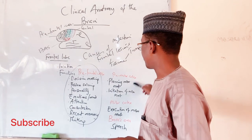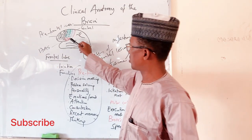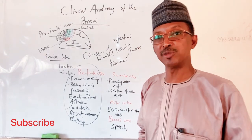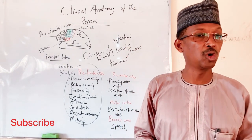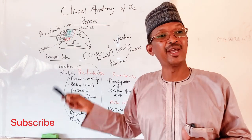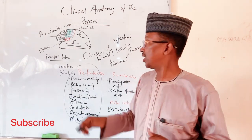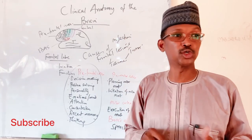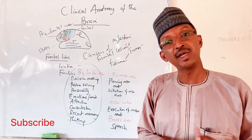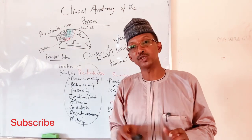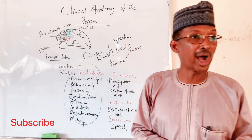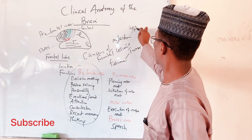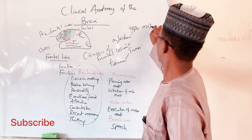If there is damage to the pre-motor cortex, there will be no planning or initiation of voluntary motor movement. If both the pre-motor and primary motor cortex are affected, then planning, initiation, and execution of voluntary motor movement are all lost — resulting in what we call upper motor neuron lesion.